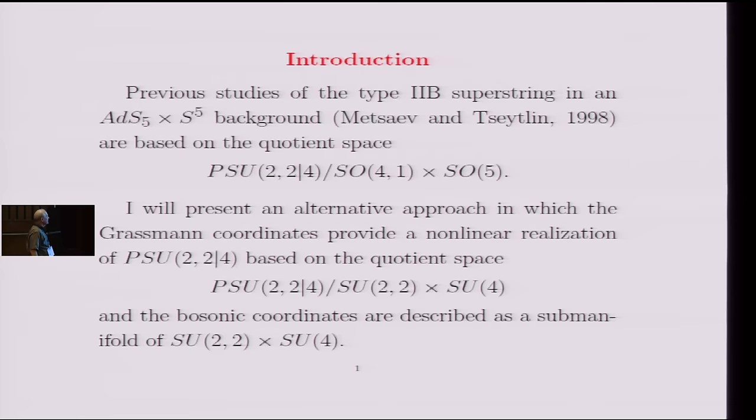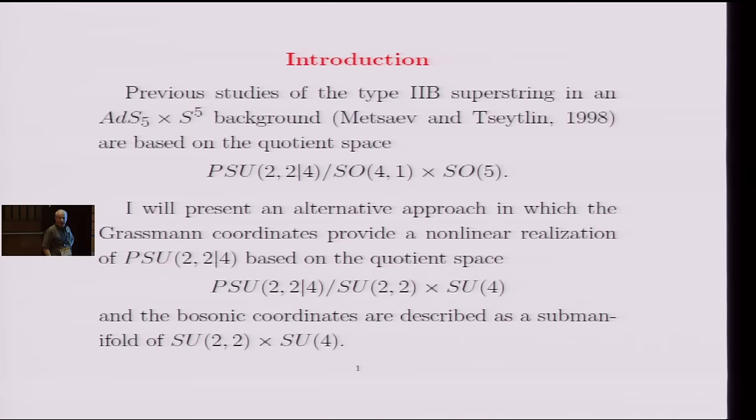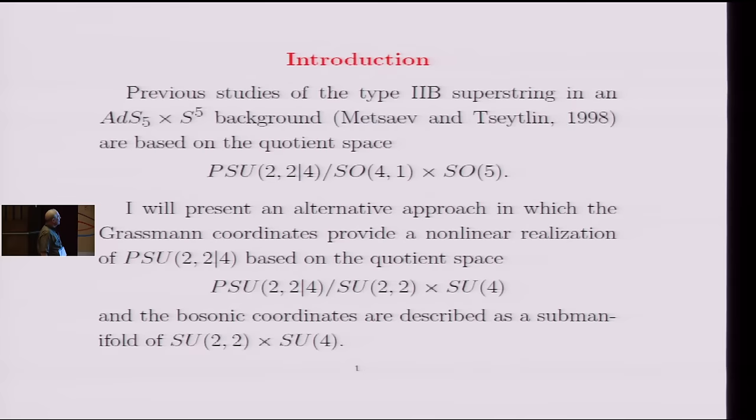Their approach to studying this was to understand this background as a coset space given by the global isometry group, which is a supergroup called PSU(2,2|4), and then modding out by the appropriate subgroup, SO(4,1) times SO(5). This quotient space is supposed to describe the superspace geometry. That's certainly correct, but it's not the only way to do things.